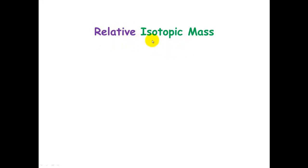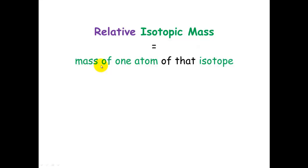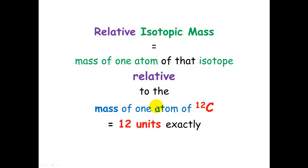Relative to other atoms, what is the isotopic mass of the isotope? Relative isotopic mass is the mass of one atom of that isotope relative to the mass of one atom of carbon-12. The mass of one atom of carbon-12 is given exactly 12 units.